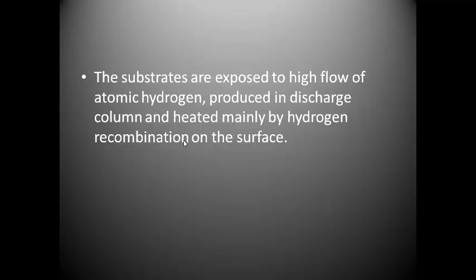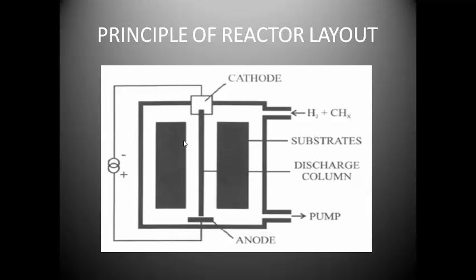The substrate is exposed due to high flow of atomic hydrogen produced in the discharge column and heated mainly by hydrogen recombination on the surfaces. In this setup we can observe that the gases H2 and CH4 — methane or ethane — are allowed to pass through this process because these are very important for this process, due to which the chemical vapor deposition is going to occur. And this is the principle of the main reactor layout.